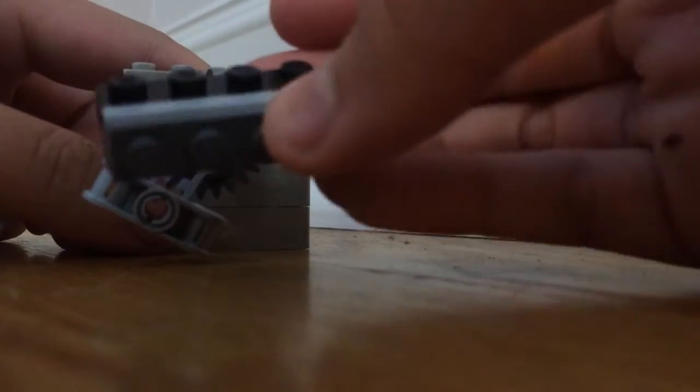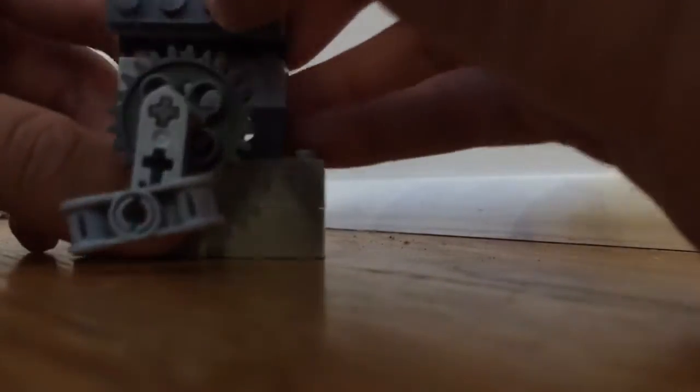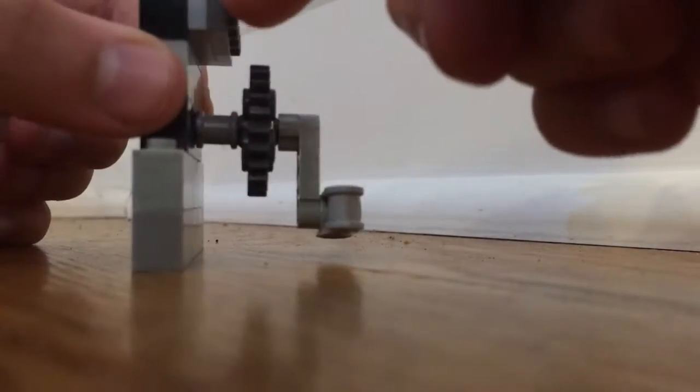You're gonna take the lever piece, stick that on the front so it looks like this, so you can turn it. Then you're gonna take the headlight piece and you stack it on - it has to have the two panels right here or it won't work.